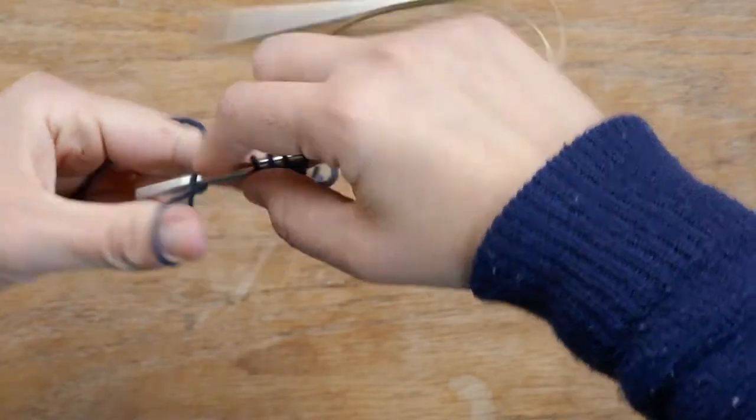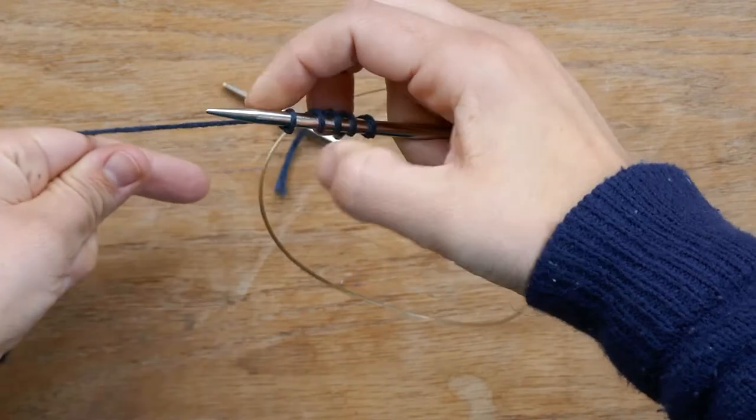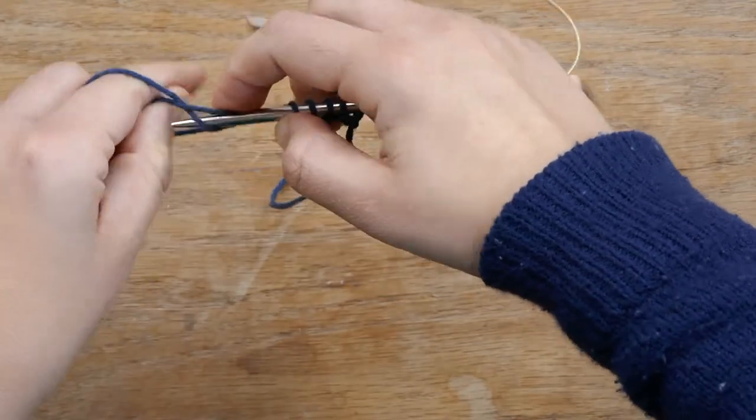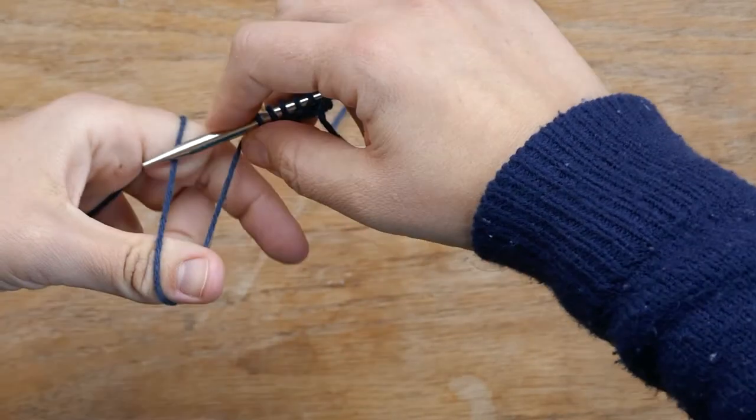One thing you need to keep in mind is that you cannot use a bumpy yarn at all, because the bumps will get stuck. So you need to use a skewed yarn and keep your tension fairly tight.